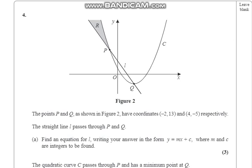So without further ado, let's get started. The points P and Q as shown in figure 2 have coordinates (-2, 13) and (4, -5) respectively. The straight line passes through P and Q. Part A states find an equation for L, writing your answer in the form y = mx + c, where m and c are integers to be found.